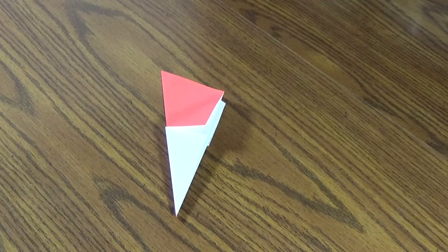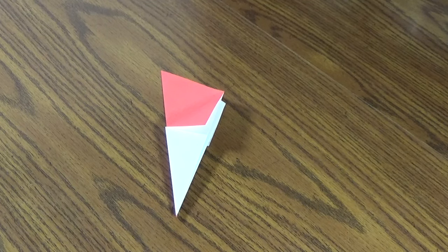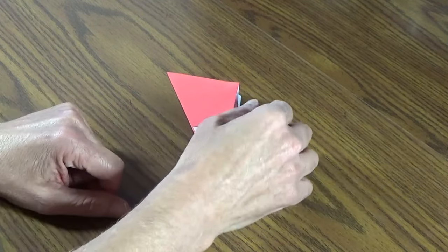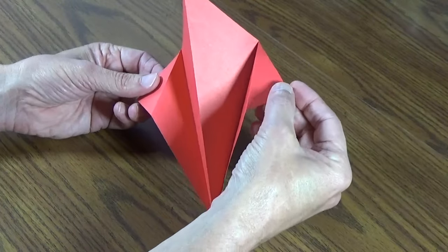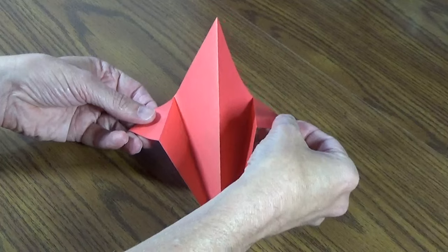Now we just have to pull it out and form it into the kite. So take a hold of each of these flaps that are sticking out and we're going to pull them out so it can stand upright.